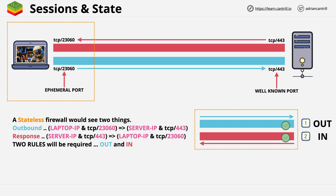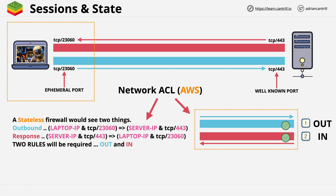With the stateless firewall, this is two rules — one outbound and one inbound. This is a situation where we're securing an outbound connection. If we were looking to secure a web server where connections were being made into our server, then the initial traffic would be inbound and the response would be outbound. There's always initiating traffic and response traffic, and you have to understand the directionality to know what rules you need with a stateless firewall.